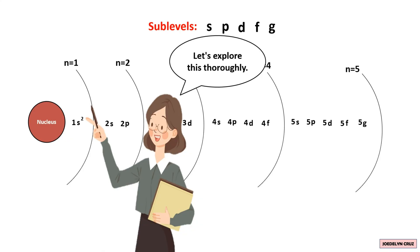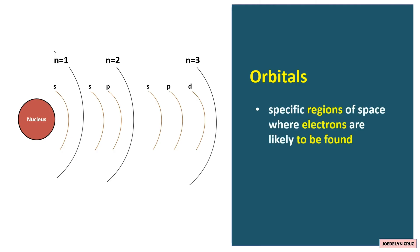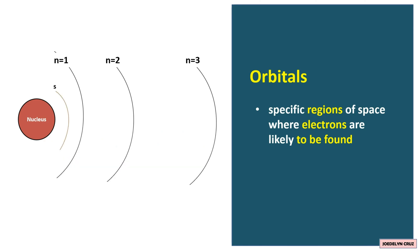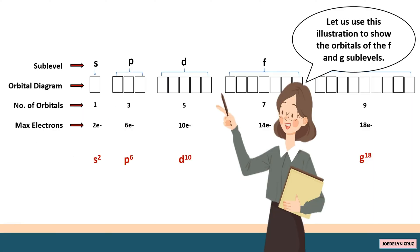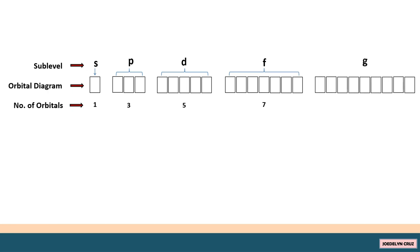Let's explore this thoroughly. Sublevels contain orbitals. Orbitals are specific regions of space where electrons are likely to be found. Each sublevel consists of one or more orbitals. For the S sublevel, there is one orbital. For the P sublevel, there are three orbitals. For the D sublevel, there are five orbitals. The F sublevel has seven orbitals, represented by seven boxes in the orbital diagram. Lastly, the G sublevel has nine orbitals.